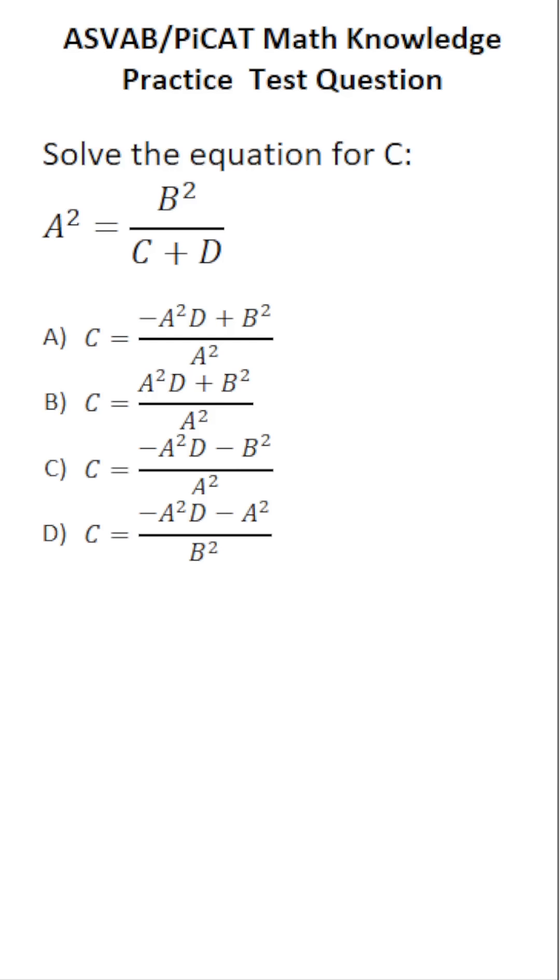This math knowledge practice test question for the ASVAB and PiCAT says solve the equation for C. We have A squared equals B squared over C plus D. In other words, we have to solve this literal equation for C.